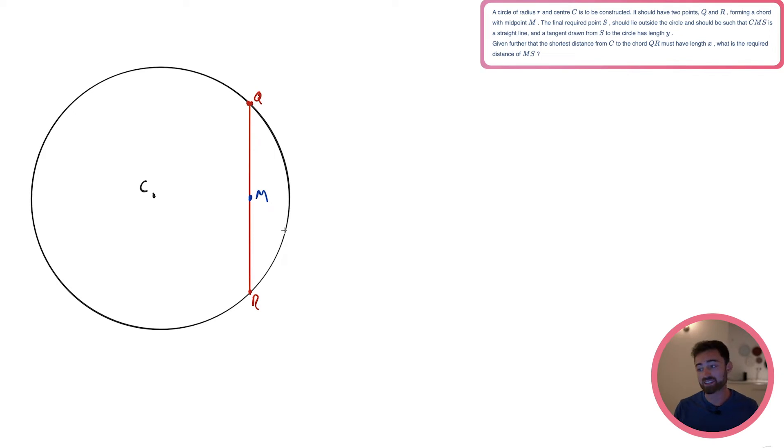The final required point S should lie outside the circle and should be such that CMS is a straight line. I'm not even going to finish the sentence. I'm going to stop there. CMS is a straight line, which means that if I was to draw a straight line from C to M and then carry it on, S is going to lie on this line, isn't it? So maybe let's make it this big. We don't know exactly how far it is. That doesn't matter. We're just working with algebraic quantities here. So, okay. C to M looks like this. And then, C is hard enough. There we go. We're even trying to make the diagram. Okay. Let's stick S on the end of this line. So S is going to be here.